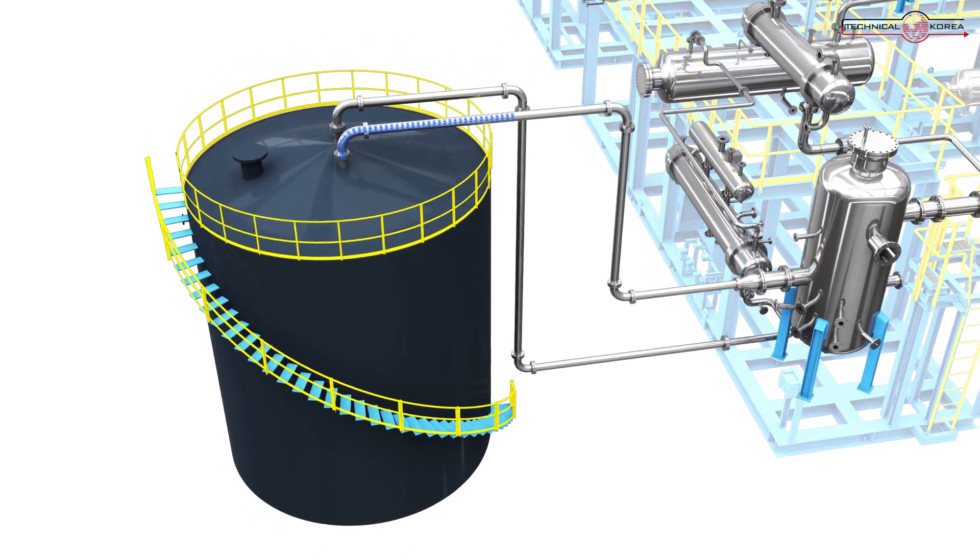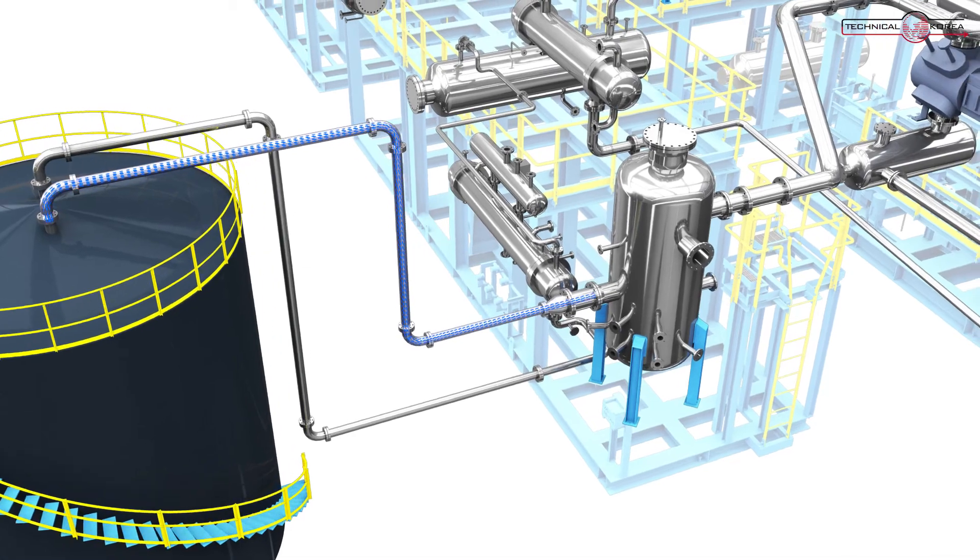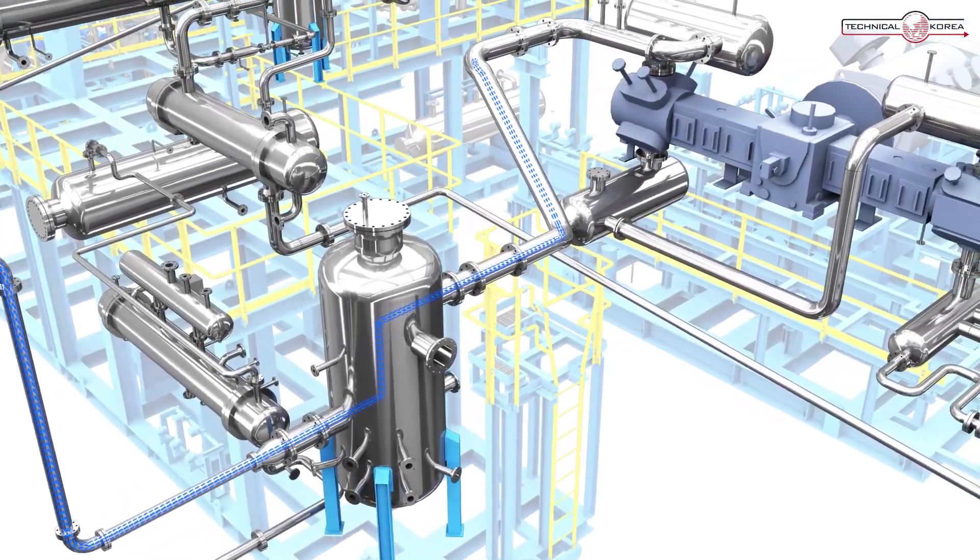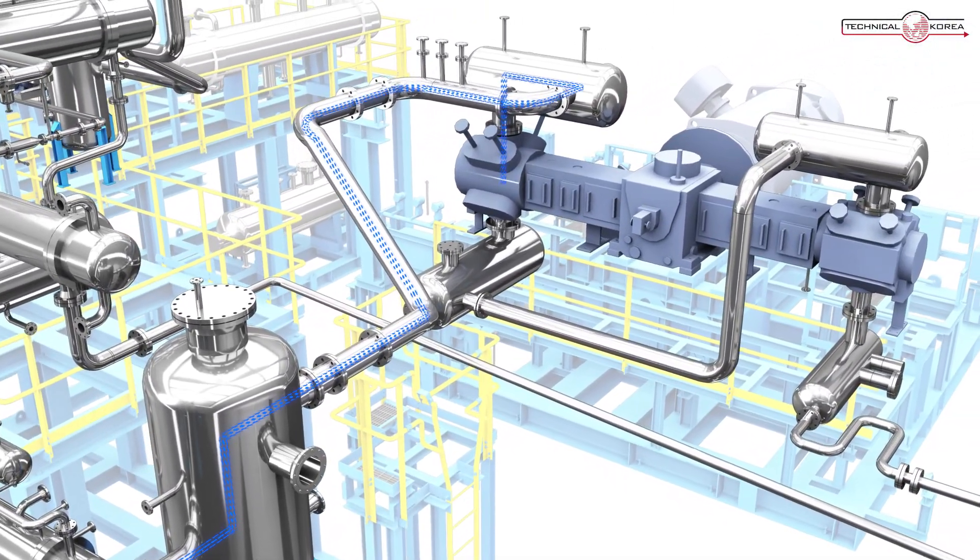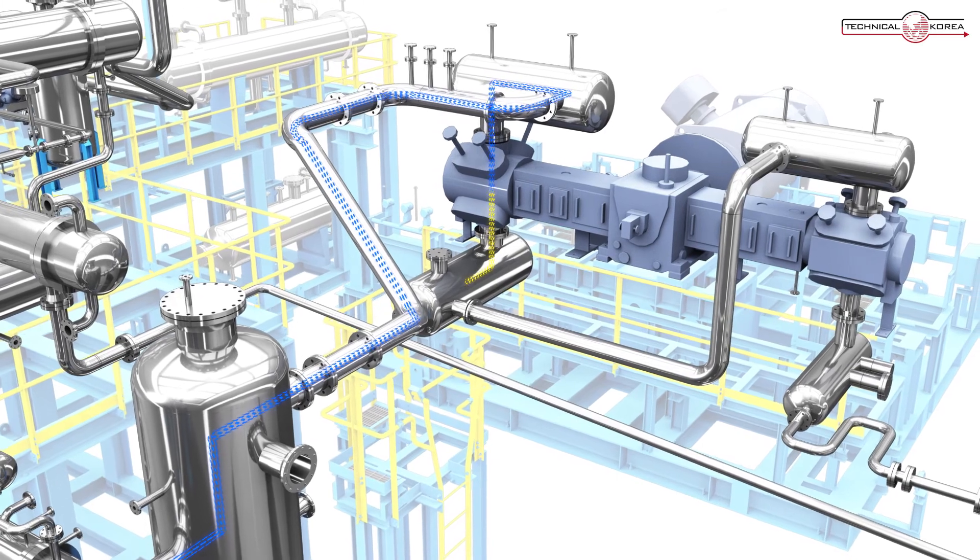BioEG, образующийся в резервуаре для хранения этилена, поступает в систему BioEG при давлении около 0,03 кг на квадратный сантиметр.